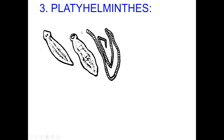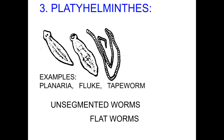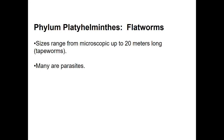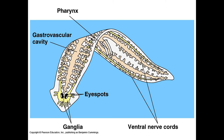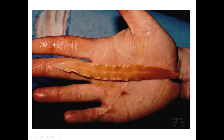Platyhelminthes — as you can see, they're unsegmented worms, flatworms. Examples: Planaria, fluke, and tapeworm. Size ranges from microscopic up to 20 meters long. Many are parasites. A tapeworm doesn't have a true head — it just has a place to attach to suck nutrients out of a host. A flatworm has ganglia, eye spots, a gastrovascular cavity, a pharynx, and nerve cords. There's a picture of a real-life flatworm where you can kind of see that setup.